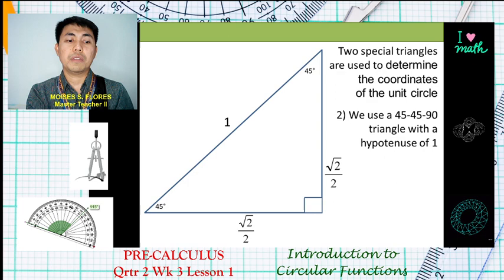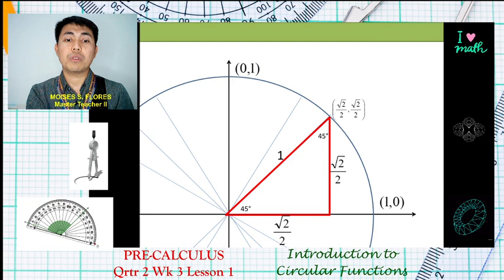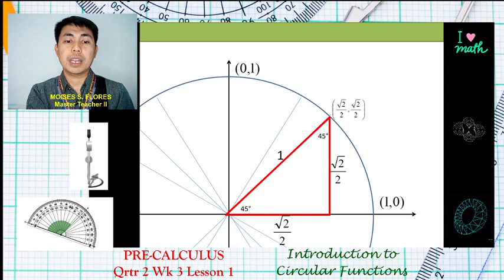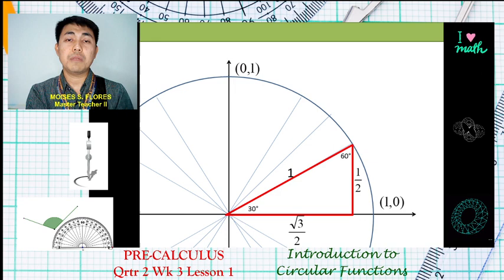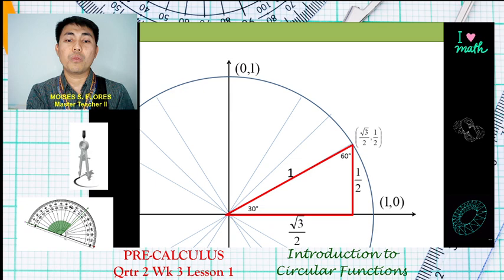For the 45-45-90 triangle, both sides have the value √2/2, so the coordinates are (√2/2, √2/2). For another 30-60-90 orientation, it's just a matter of interchanging the x and y values, giving coordinates of (√3/2, 1/2).